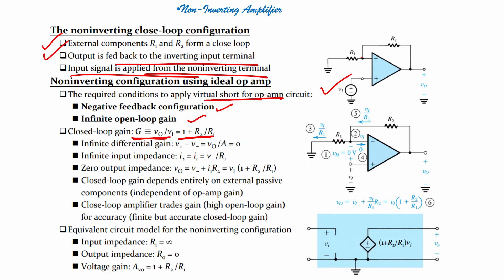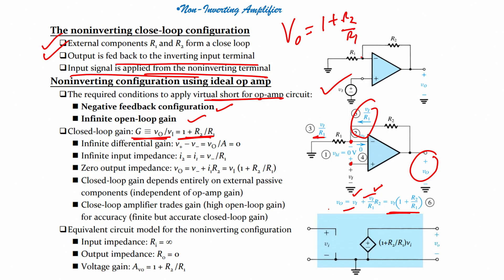R1 is here and is grounded, R2 is the feedback resistor. Because of the virtual ground concept, the difference voltage is 0 — whatever voltage is at the non-inverting terminal, the same voltage appears at the inverting terminal. The current is V/R1. Therefore, VO equals V1 plus (V1/R1)×R2, which simplifies to V1×(1 + R2/R1). So the output voltage is 1 + R2/R1 times the input.